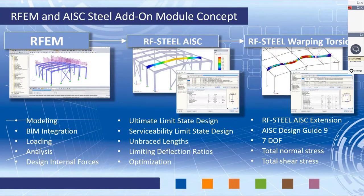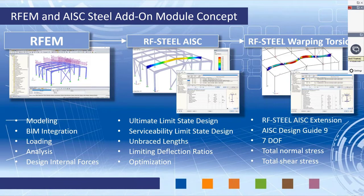In regards to RFEM and the AISC steel add-on module concept, RFEM is our main finite element analysis software that allows us to fully model our structure. We can integrate with BIM software such as Revit, Tekla, and AutoCAD. We fully load our structure, create load combinations according to a specific standard such as ASCE 7 or the NBC, or manually, then run a full analysis. The analysis gives us information such as internal forces, deflections, support reactions, which we can export into our own design tools — Microsoft Excel, in-house tools, or hand calculations.